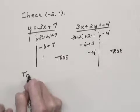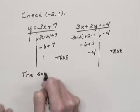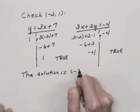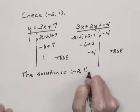And then we can say that the solution of the system of equations is the ordered pair negative 2, 1.